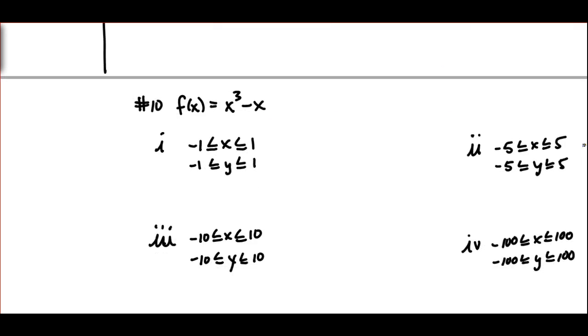To illustrate choosing a good window and how that affects a graph, I would like students to try number ten from the homework. Students will simply type in on their graphing calculator x to the third minus x, and then they are going to modify the window in four different ways to see how the graph looks. A quick review on how to modify the window. On a TI 83, you simply hit the window button. On an Inspire calculator, you will need to hit the menu button, and then you will see that there are choices for window or window zoom, as well as window settings.